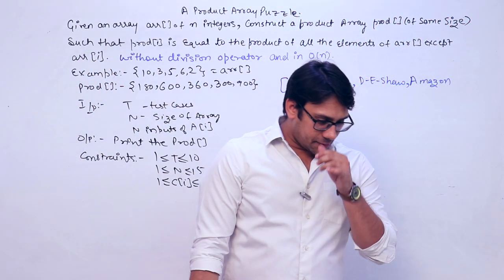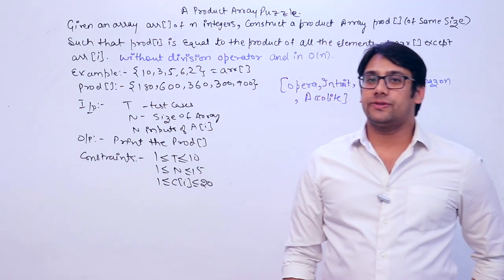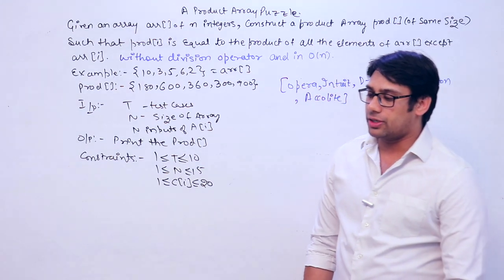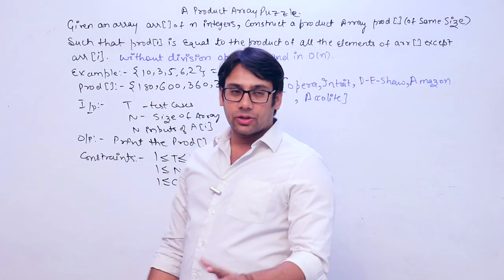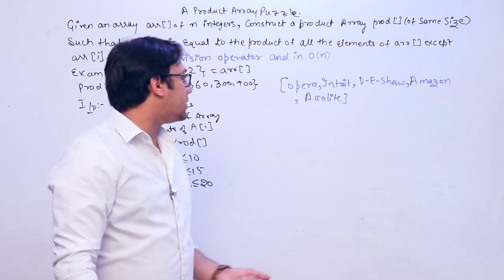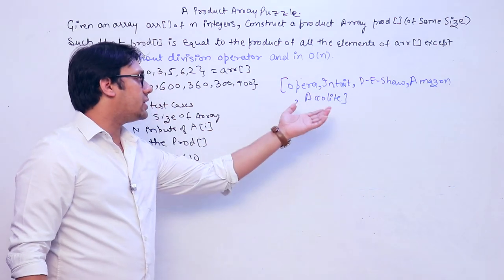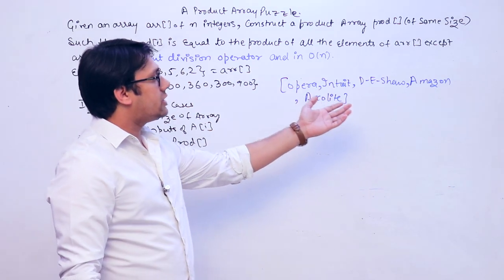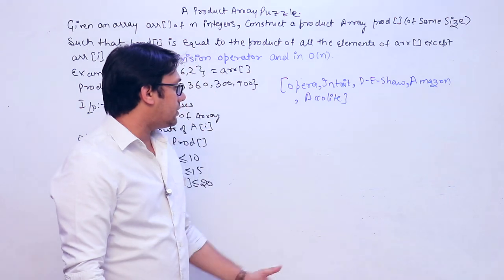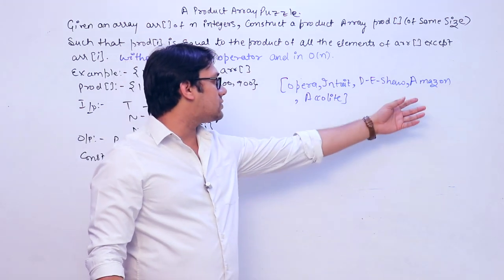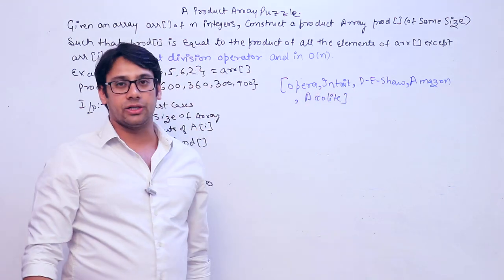Now let us look at the next problem, which is also called the Product Array Puzzle. This problem is asked in many companies, for example Opera, Intuit, D.E. Shaw, Amazon, and Accolite. We have already seen an overview of Amazon and Intuit.